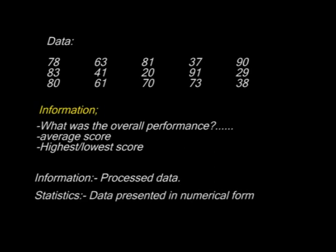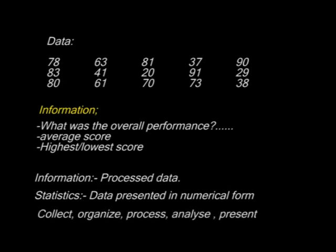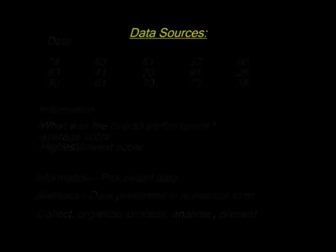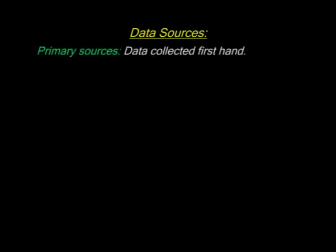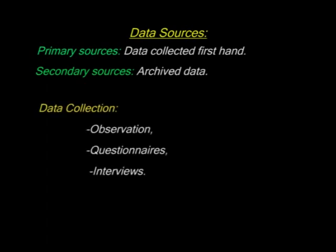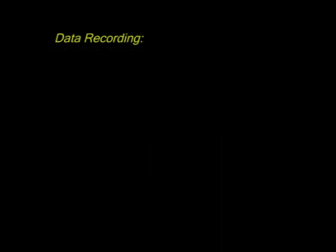Simply put, statistics is information represented in numerical form. The field of statistics deals with data collection, organization, processing, analysis, and presentation. Now, where do we get this data from? There are two sources: one is the primary source — data collected for the first time — and secondary data, which is data that has been collected by others that one wants to use for analysis, possibly stored or archived. Data can be collected through observation, questionnaires, interviews, and so on.